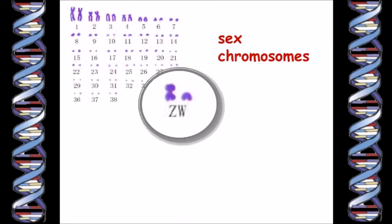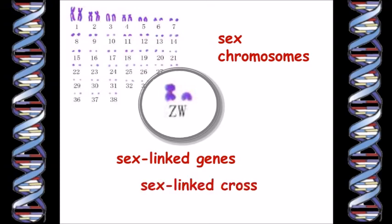As well as the actual genes that determine sex, the sex chromosomes also carry other genes. Genes that are carried on the sex chromosomes are called sex-linked genes. These are the basis of sex-linked crosses, which are a way of telling whether your newly hatched chicks are girls or boys. So naturally they are very popular.